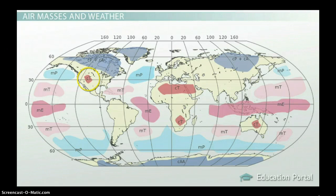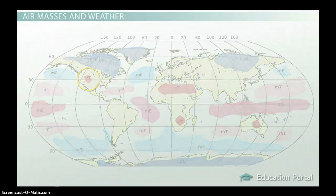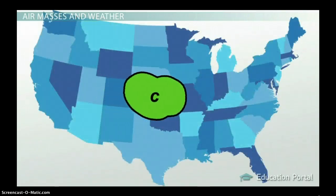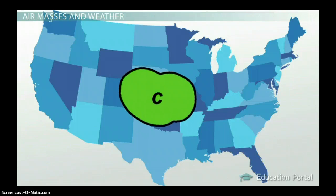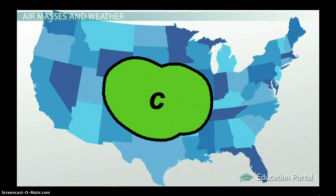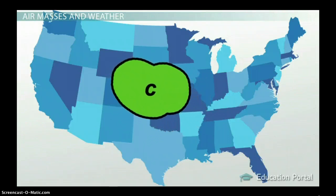Just because air masses are found over a region of Earth doesn't mean that they stay put. In fact, they can move both horizontally and vertically. When air masses move, we can have some drastic changes in weather.